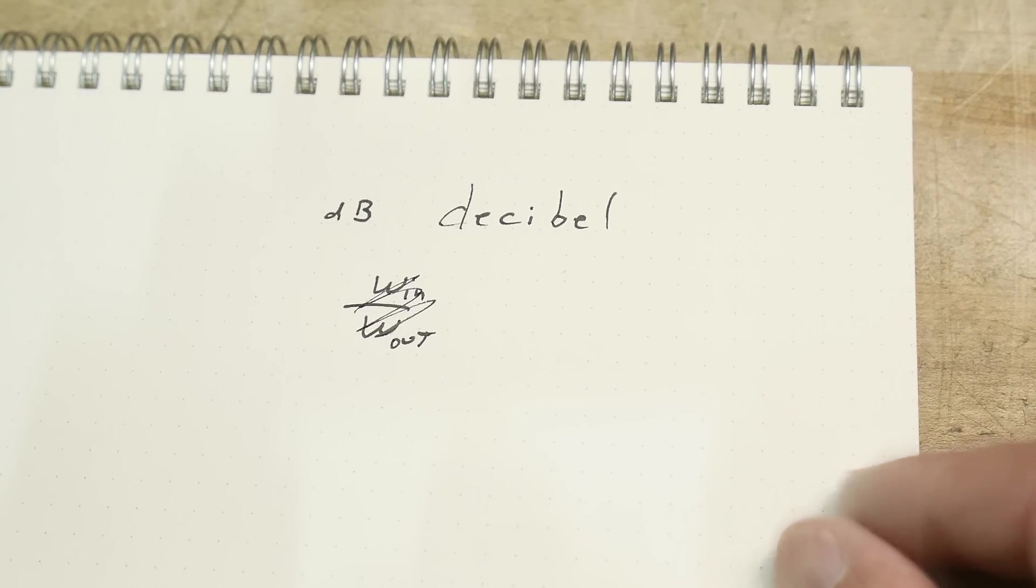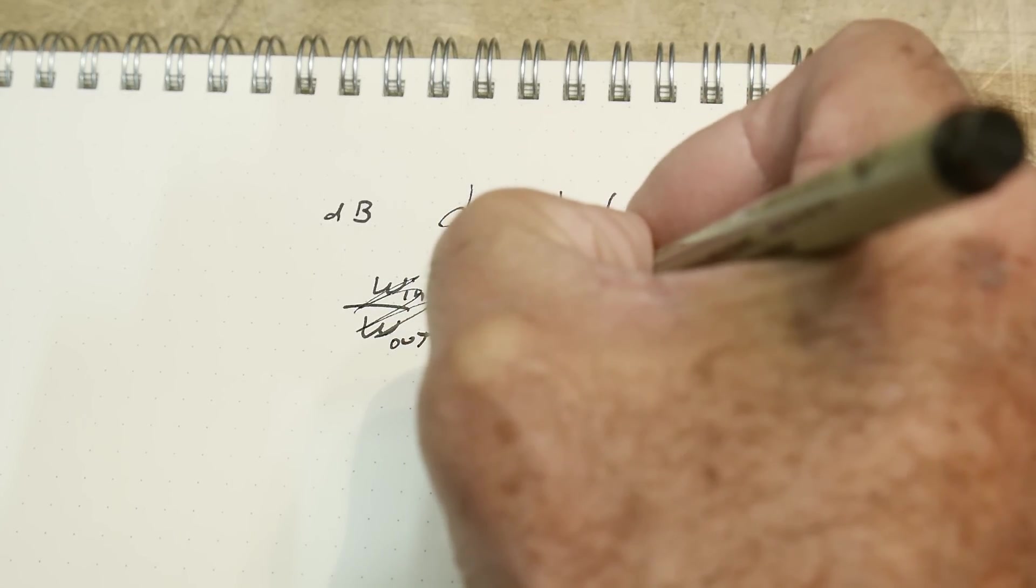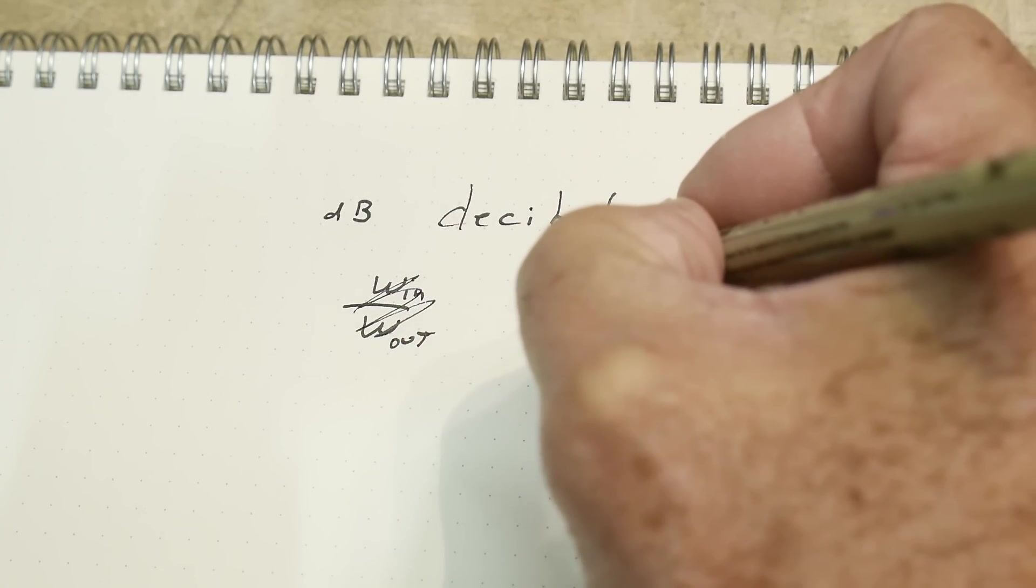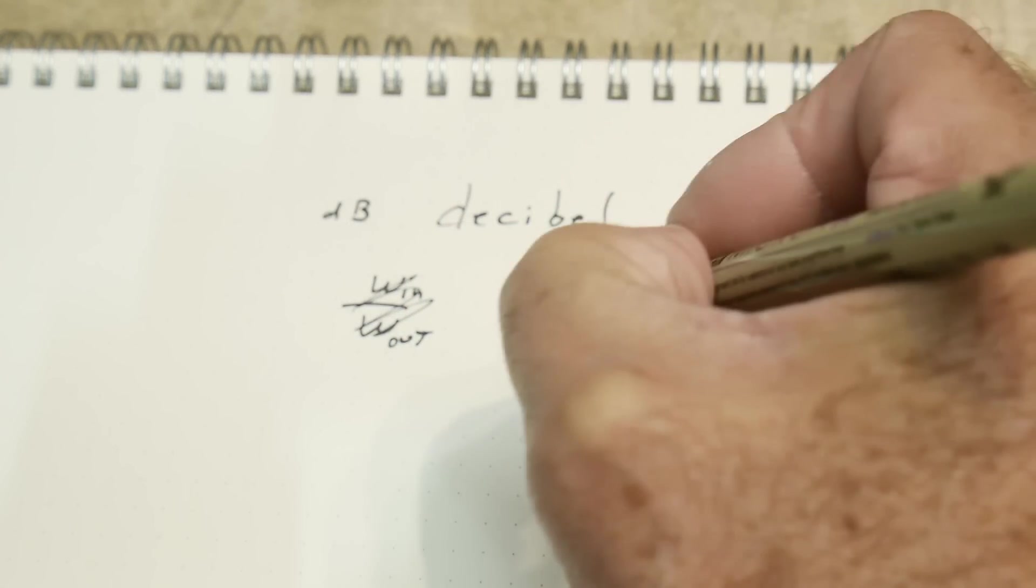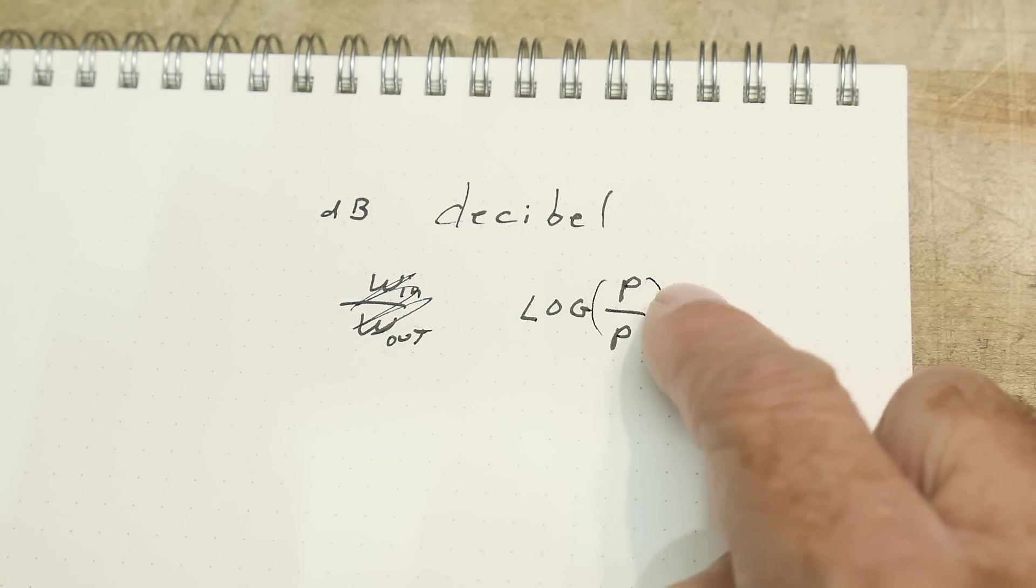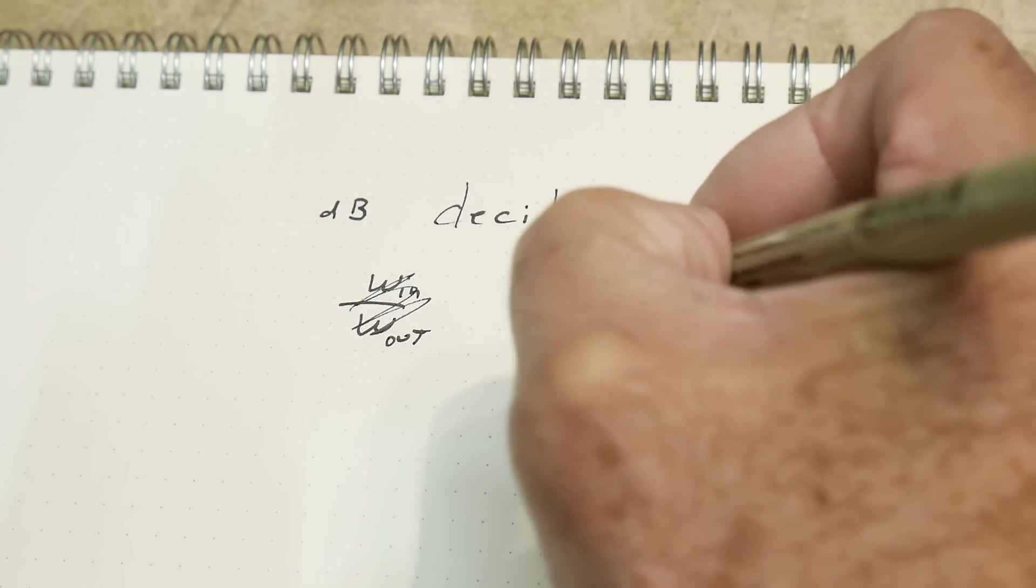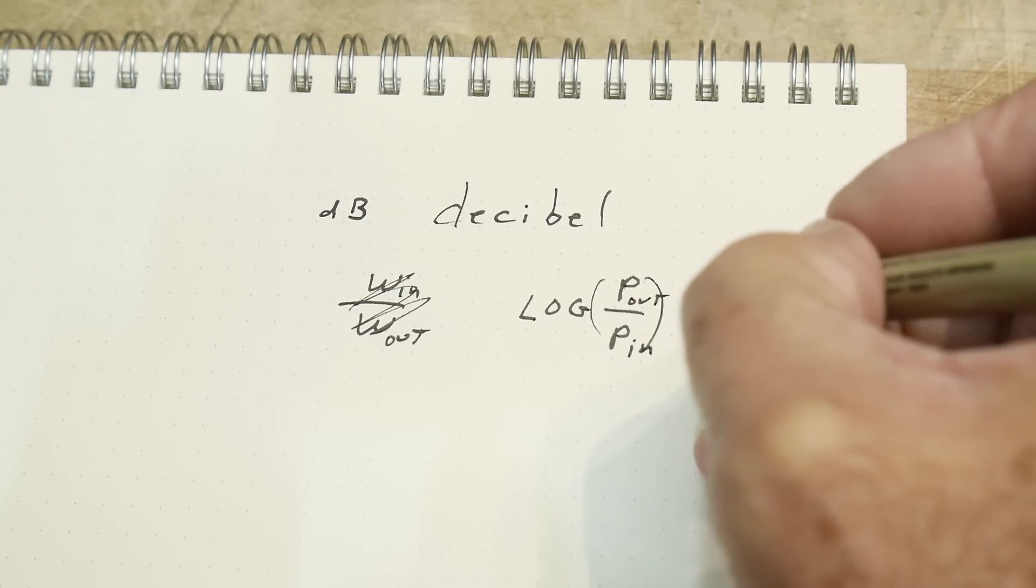He wanted different size numbers, so he decided to use logarithms. It's going to be the logarithm of power divided by power, so power out divided by power in. He called this a Bell.